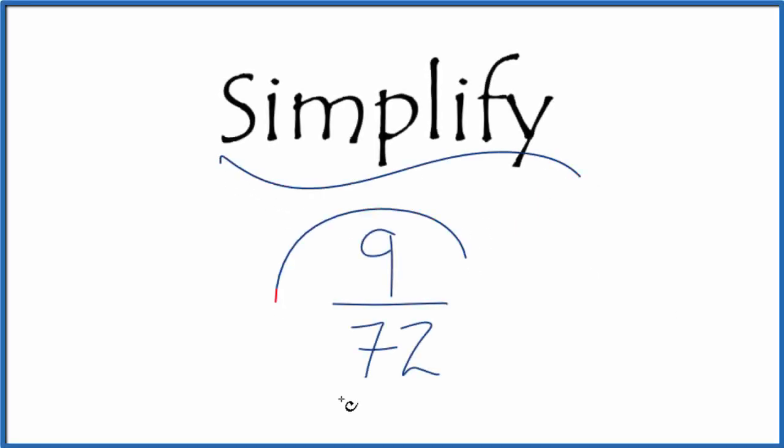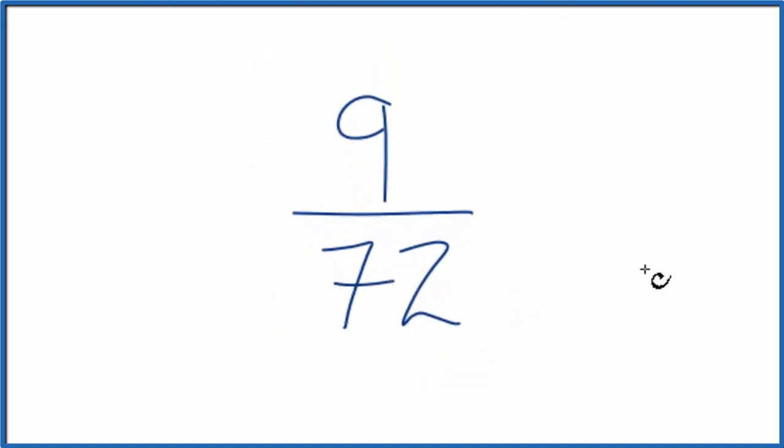Let's simplify the fraction 9 over 72. Here's how we do it. We're trying to get another fraction that's equivalent, has the same value as 9 over 72, but it's in its simplest form or its reduced form. So we need to find a common denominator.